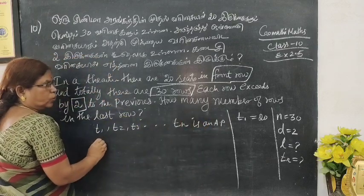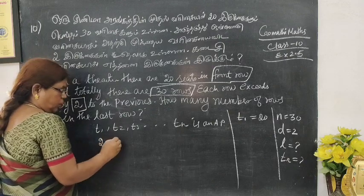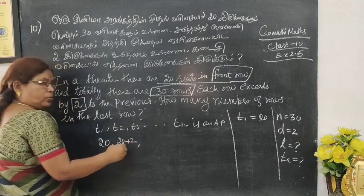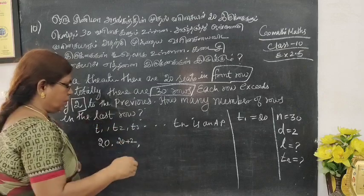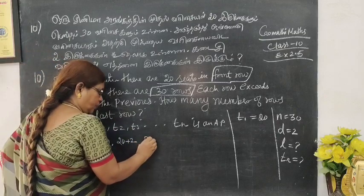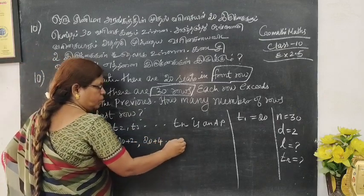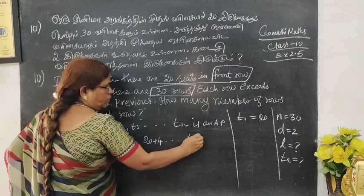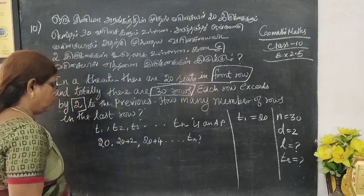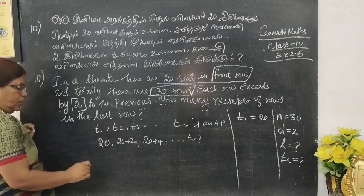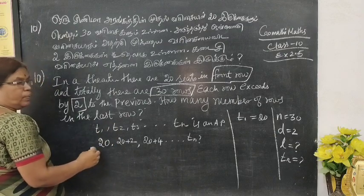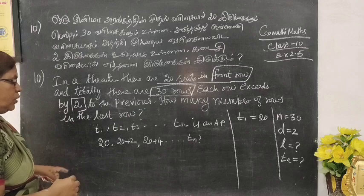T1 is 20. T2 is 20 plus 2, each row exceeds by 2. T3 is 20 plus 4. This is TN value. So it is AP. So TN formula is A plus N minus 1 into D.